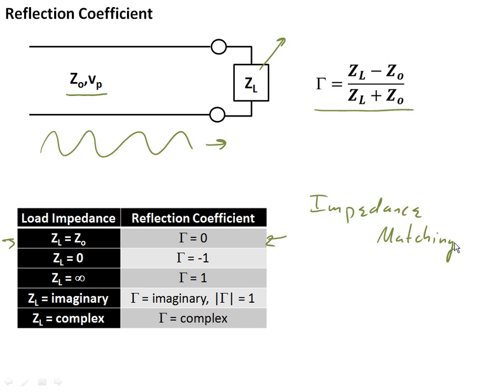If in the case, we basically take this load and get rid of it, and in other words, what we're going to do here, is we're going to replace this with a short circuit. In that case, the load impedance is 0, the reflection coefficient is minus 1, and all the wave goes back 180 degrees out of phase.